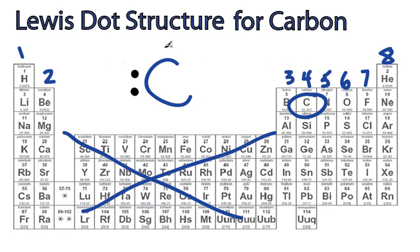and then we go 3, 4. So 1, 2, 3, 4. Carbon is in group 4 right here, so it has 4 valence electrons, and you're done.